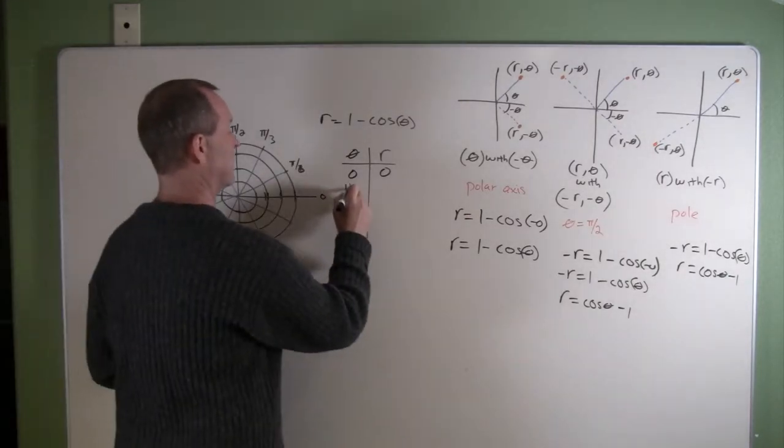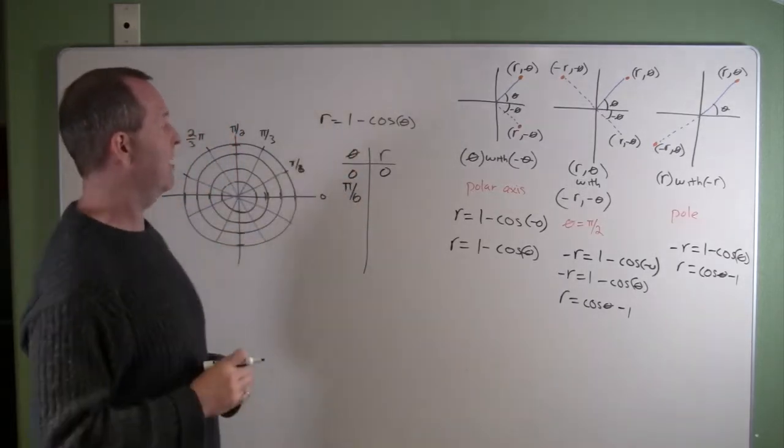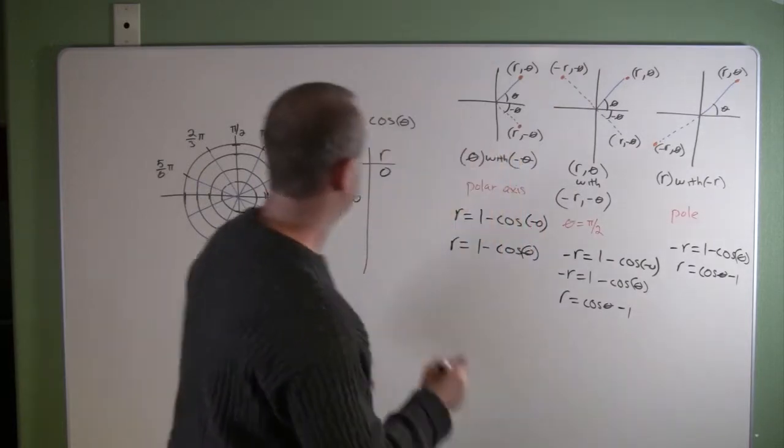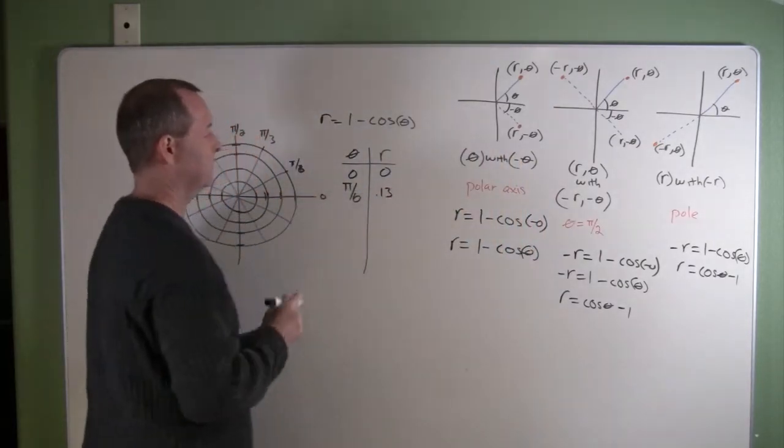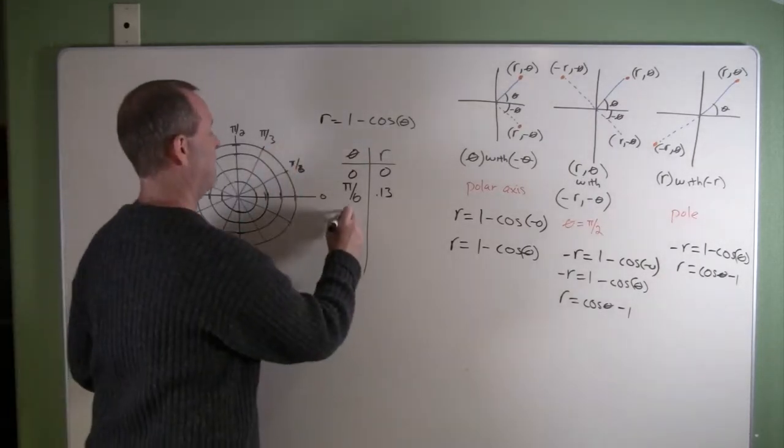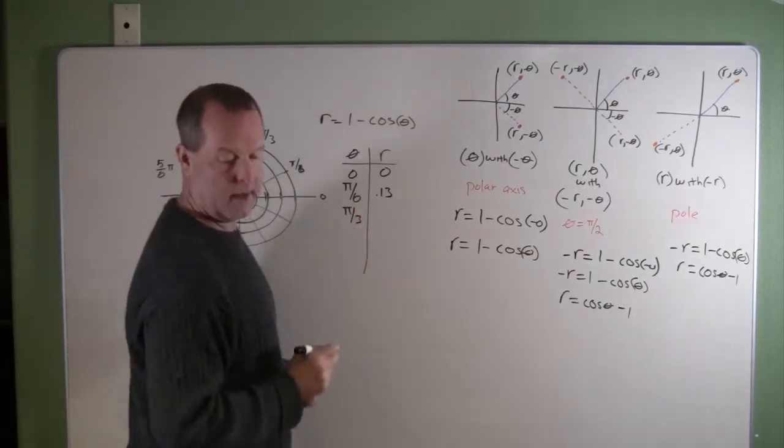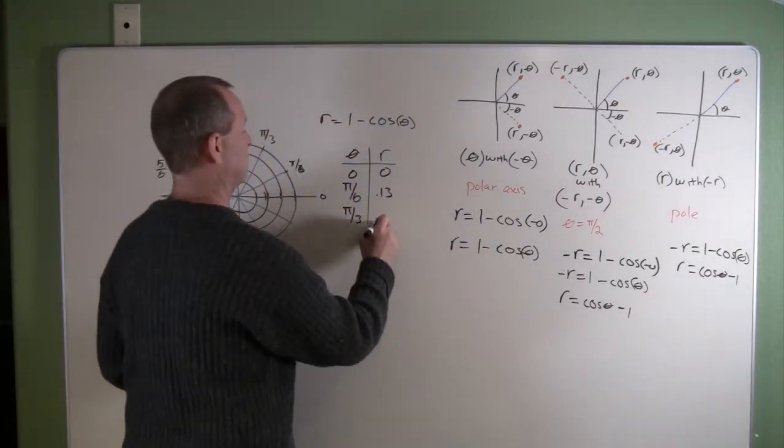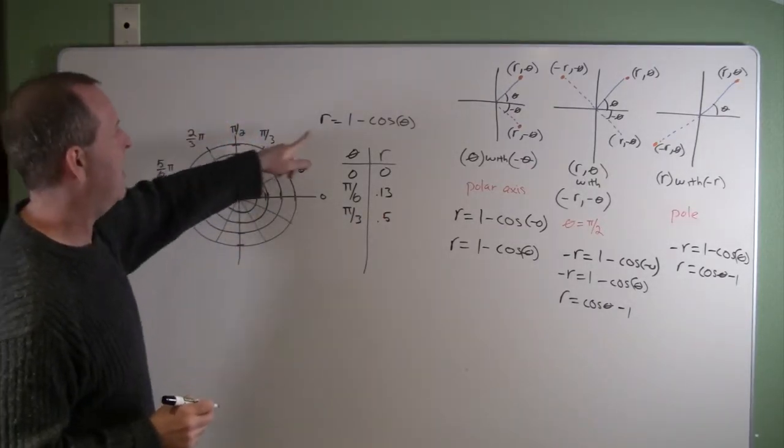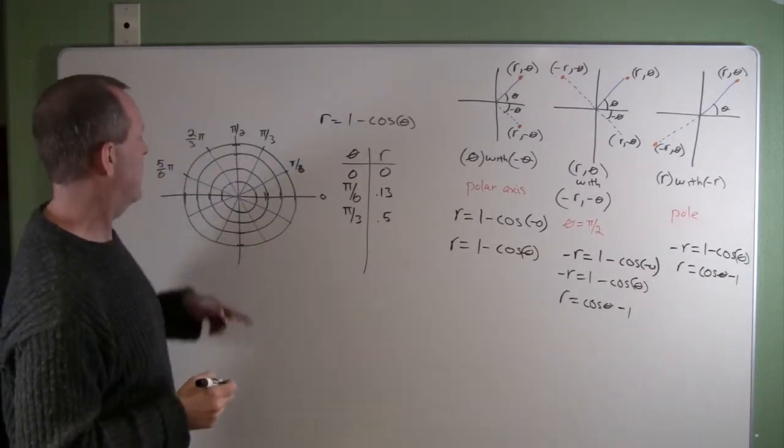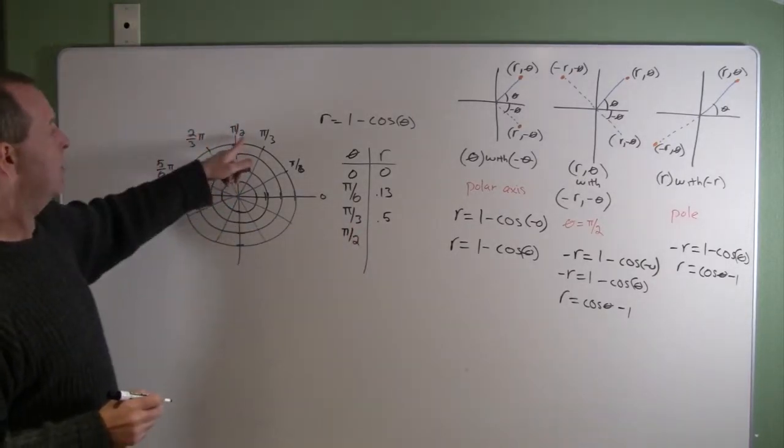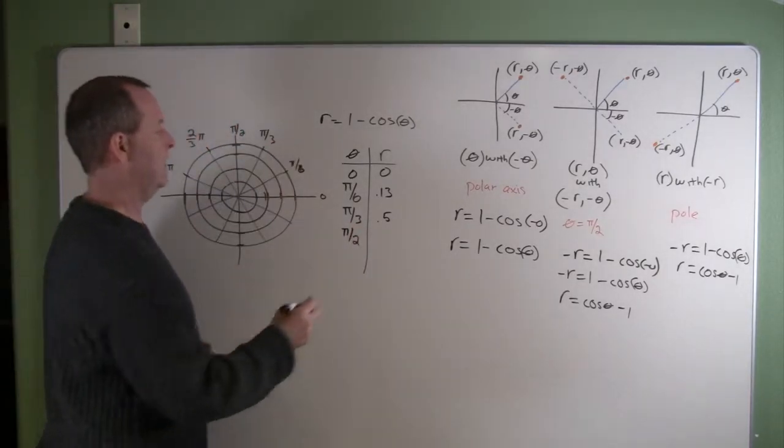If I choose pi over 6, 1 minus the cosine of pi over 6, this gives me 0.13. 1 minus the cosine of pi over 3. Pi thirds was 1 half. Because cosine of pi thirds is 1/2, 1 minus 1/2 is 1/2. The next point we want to do is pi over 2. The cosine of pi over 2 is 0. 1 minus 0 gives me a 1.